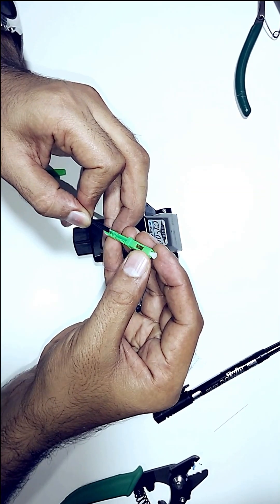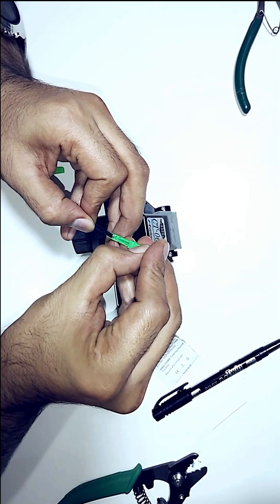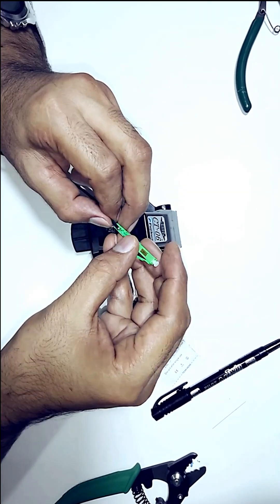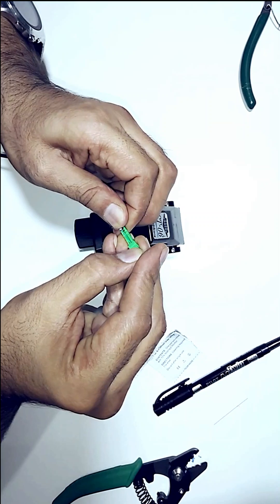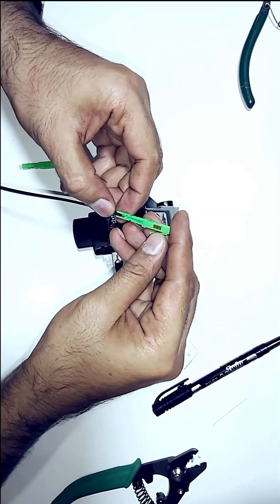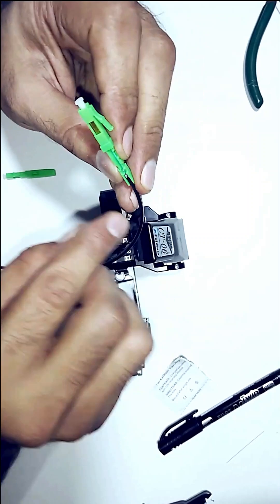Now, we can insert the fiber into the connector and lock it in place. As you can see, the cable is perfectly secured inside the connector. We'll now slide the back cover onto the connector and repeat the same process for the other end.